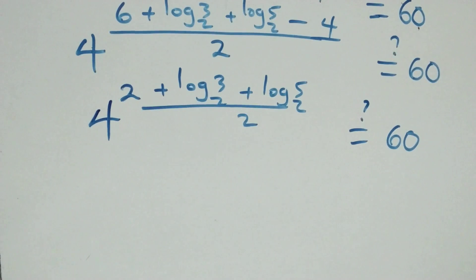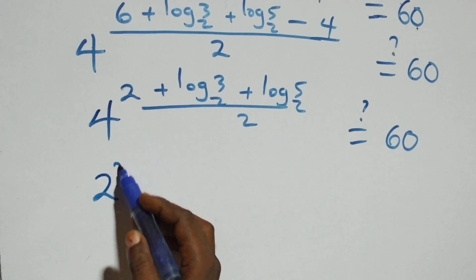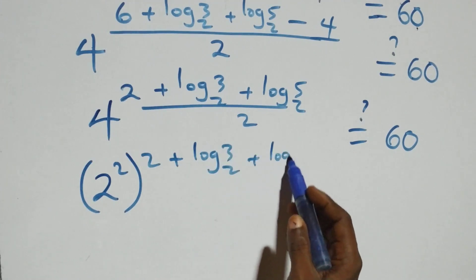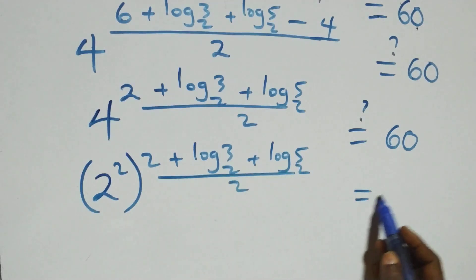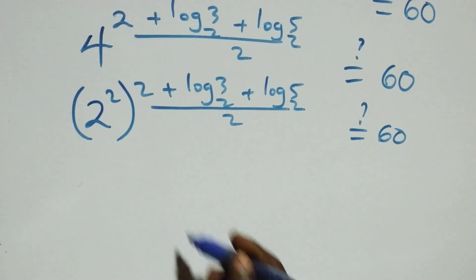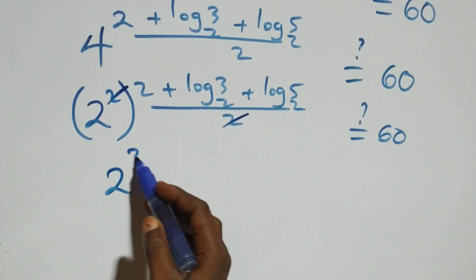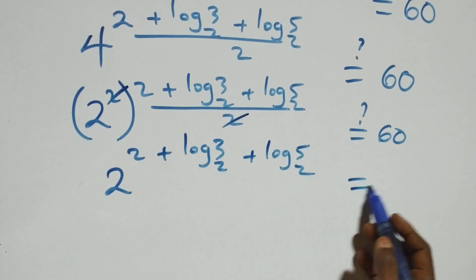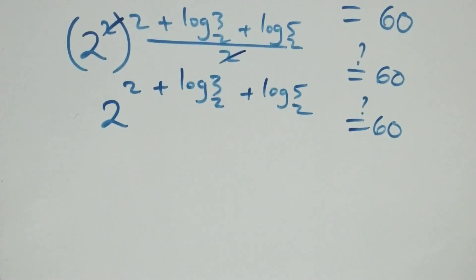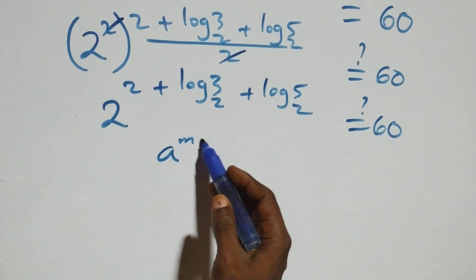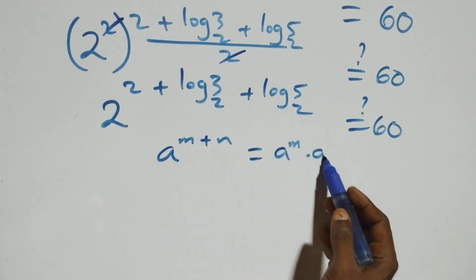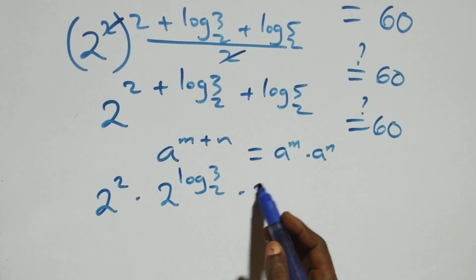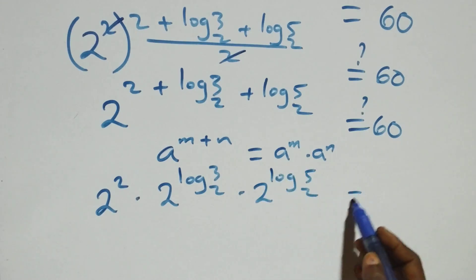Four can be written as two squared. So we have two squared raised to power (two plus log 3 base 2 plus log 5 base 2) over two, equals sixty. The twos cancel in the exponent, giving two raised to power two plus log 3 base 2 plus log 5 base 2, equals sixty. Applying the law of indices — a raised to power m plus n equals a raised to power m times a raised to power n — we get two squared times two raised to power log 3 base 2 times two raised to power log 5 base 2, equals sixty.